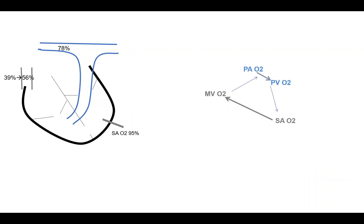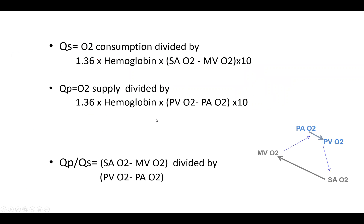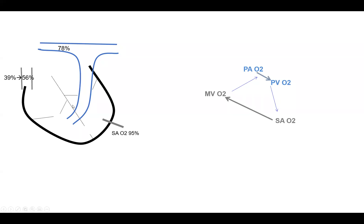As a follow-up on this patient: we placed a balloon pump for the ventricular septal rupture. After balloon pump placement, the SVC O2 went up to 56% and the PA sat stayed about the same at 78%. The new QPQS is 95 minus 56 divided by 95 minus 78, and QPQS improved from 3.7 to 2.3. Why did this happen?